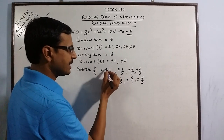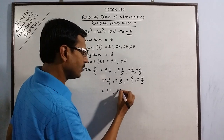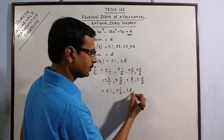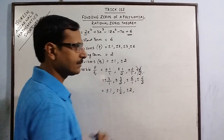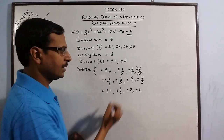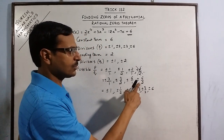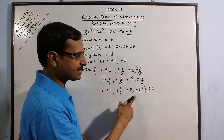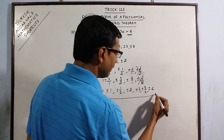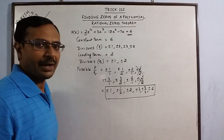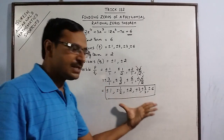Reducing all P/Q values to simplest form gives us: ±1, ±1/2, ±2, ±3, ±3/2, and ±6. Note that ±6/2 simplifies to ±3, which we already have, so we eliminate duplicates. These are 12 possible values of P/Q. Our solution — the four zeros of this polynomial — must be among these values. We are now restricted to checking only these values.